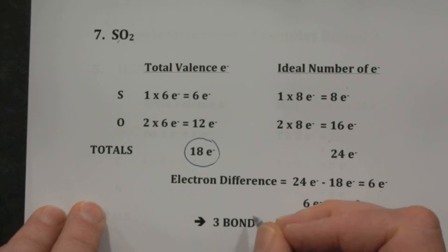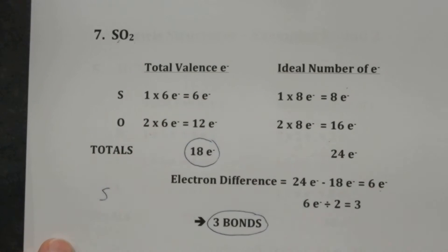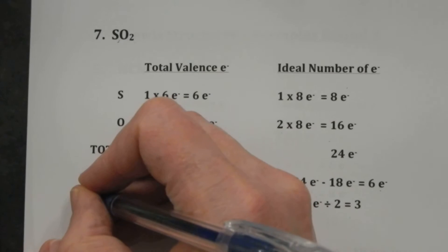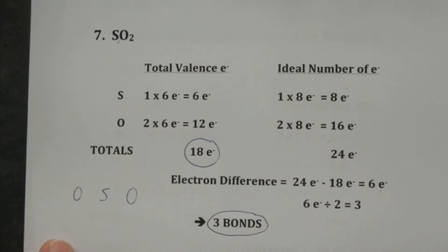The difference is six, so six electrons will be involved in three bonds. Sulfur goes in the middle because we only have one of it. That means we put an oxygen on either side.